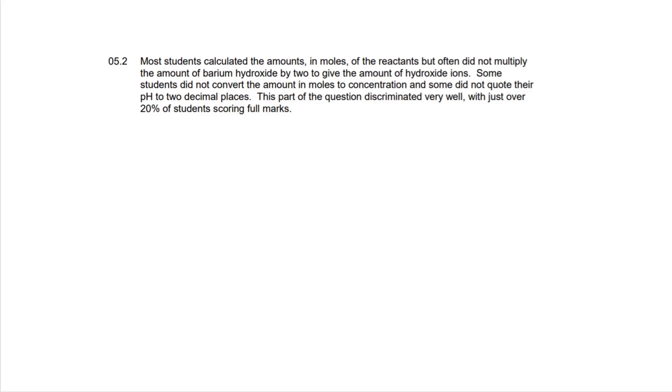So next up, super quickly, I just wanted to cover the examiner's report. These are super helpful resources. If you guys are out there revising, please take advantage of these. Just go onto the AQA website, check them out, find them for yourself, read through them. Specifically, take note of the questions where a very small percentage of students scored the full marks, because if this question comes up again, you're going to want to secure as many marks as possible. So most students calculated the amount in moles of the reactants, but often did not multiply the amount of barium hydroxide by two to give the amount of hydroxide ions. So just remember that when these ionic compounds dissociate in solution, you're going to get them separating into their constituent ions. So our barium hydroxide, a group 2 metal, is going to have two lots of this hydroxide ion within it. So you always have to multiply the moles of this by two to get our moles of hydroxide ions.